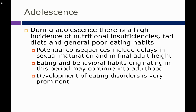Potential consequences of nutrition inadequacies include delays in sexual maturation and delays in reaching final adult height. Eating and behavioral habits originating in this period may continue into adulthood. Intervening nutritionally is cornerstone to setting a person up for a healthy adulthood. The majority of our habits are formed in childhood, even early childhood, so the earlier we can intervene and influence people, the better. That influence should occur all through childhood and adolescence because it is such a pivotal habit-forming time.